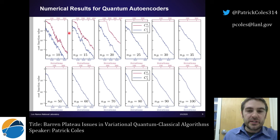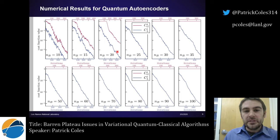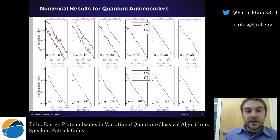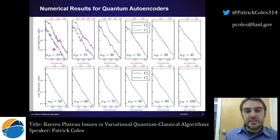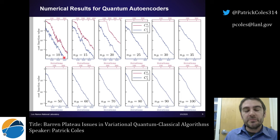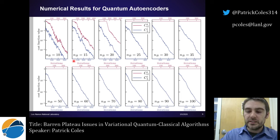These are the results of our numerics. Both cost functions train fairly well as long as the number of qubits being thrown away is less than about 20 qubits. But as soon as that number exceeds 20, the global cost function no longer trains — it's completely flat — and this behavior persists all the way up to 100 qubits. In contrast, the local cost function, the blue curve, trains essentially independently of n all the way up to 100 qubits. So if you use a local cost instead of a global cost, it works. Importantly, the local cost is a faithful cost function — it vanishes under the same conditions as the global cost — so you can indirectly train the global cost by directly training the local cost.